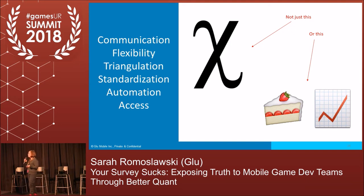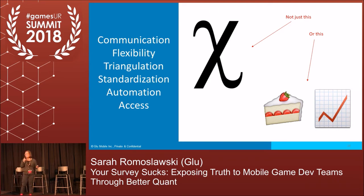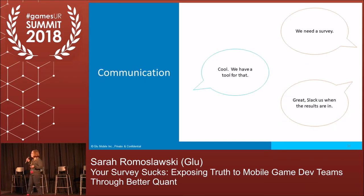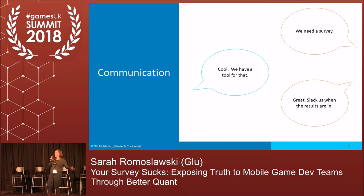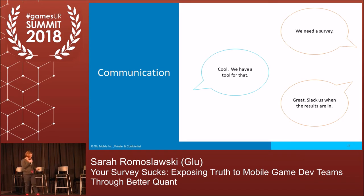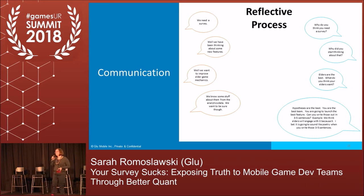Getting to where we are now — getting awesome questions from our teams — isn't just about stats and pie charts. A lot goes into it. For us, it was really about communicating better, being flexible, focusing on triangulation with analytics, standardizing some processes, automating some of those processes, and giving teams access. Research is about that reflective process. We try to answer every question with another question.